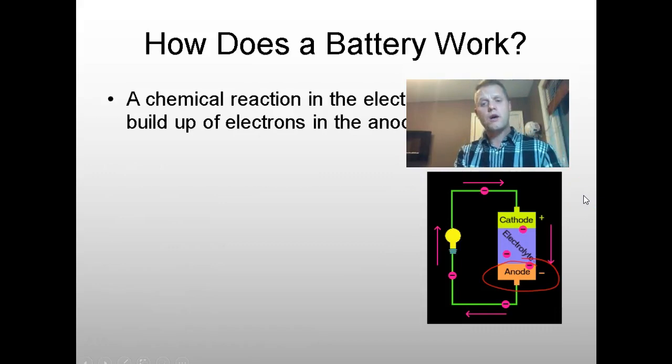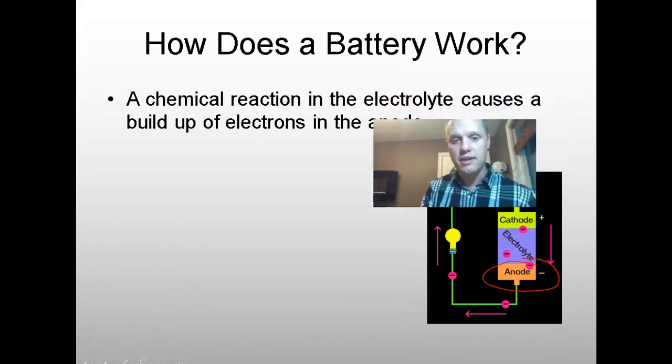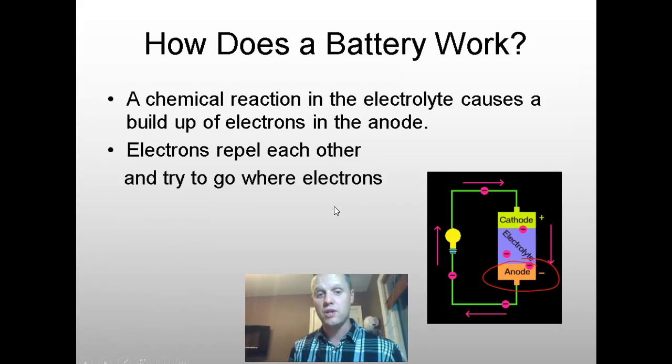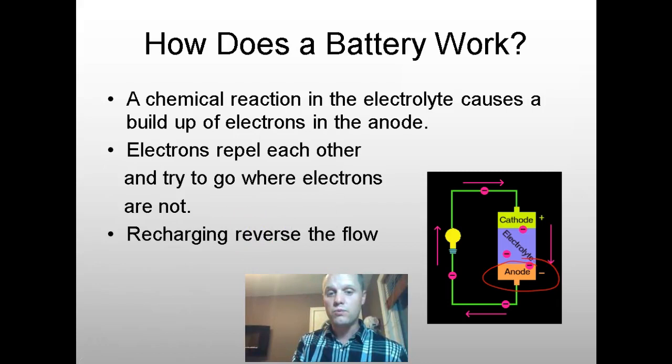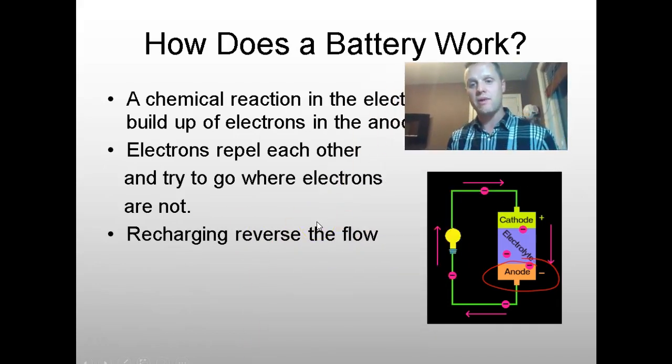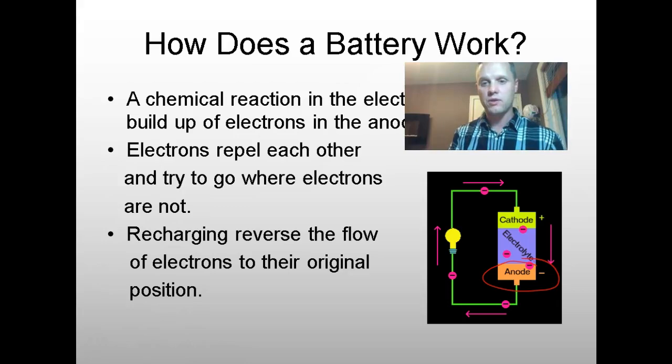How does a battery work? A battery uses direct current. You have an anode and a cathode in a battery. The anode is the negative end and the cathode is the positive end. Electrons travel from the negative end to the positive end because electrons repel each other and try to go where electrons are not. If you run your battery out, you reverse the flow to recharge it, forcing electrons back from the cathode to the anode.